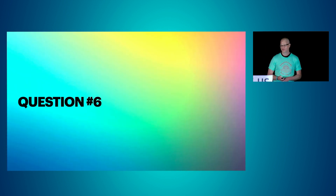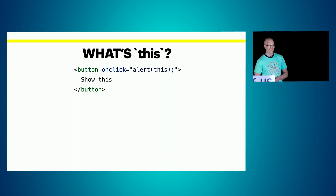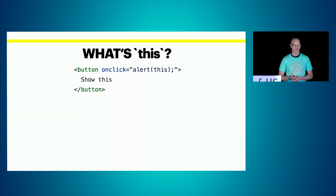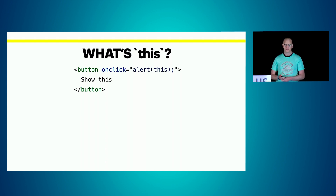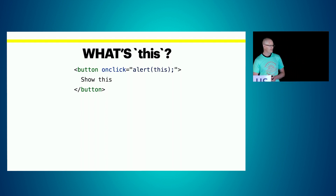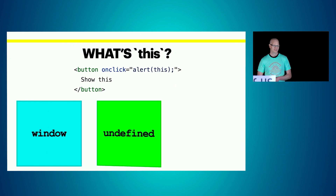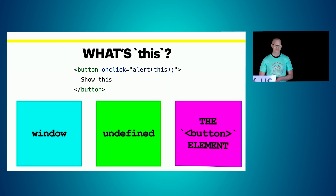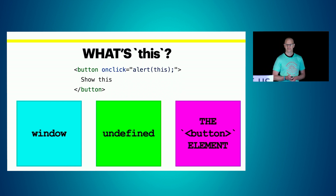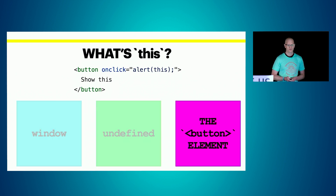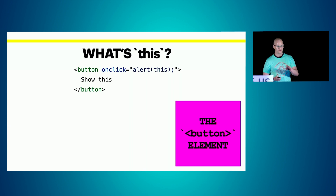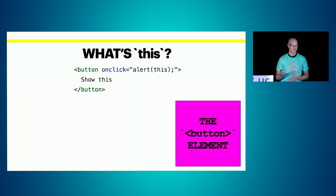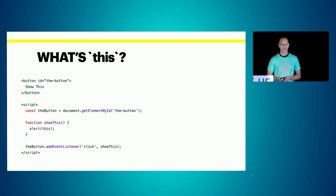Question number six: this is a button using the onclick attribute — plain old HTML and JavaScript — and we're alerting the value of 'this' when we click the button. What is 'this' going to be? Is it window, undefined, or the button element? The button element is correct. When a function is invoked as JavaScript inside that attribute, 'this' is bound to the element it's part of.